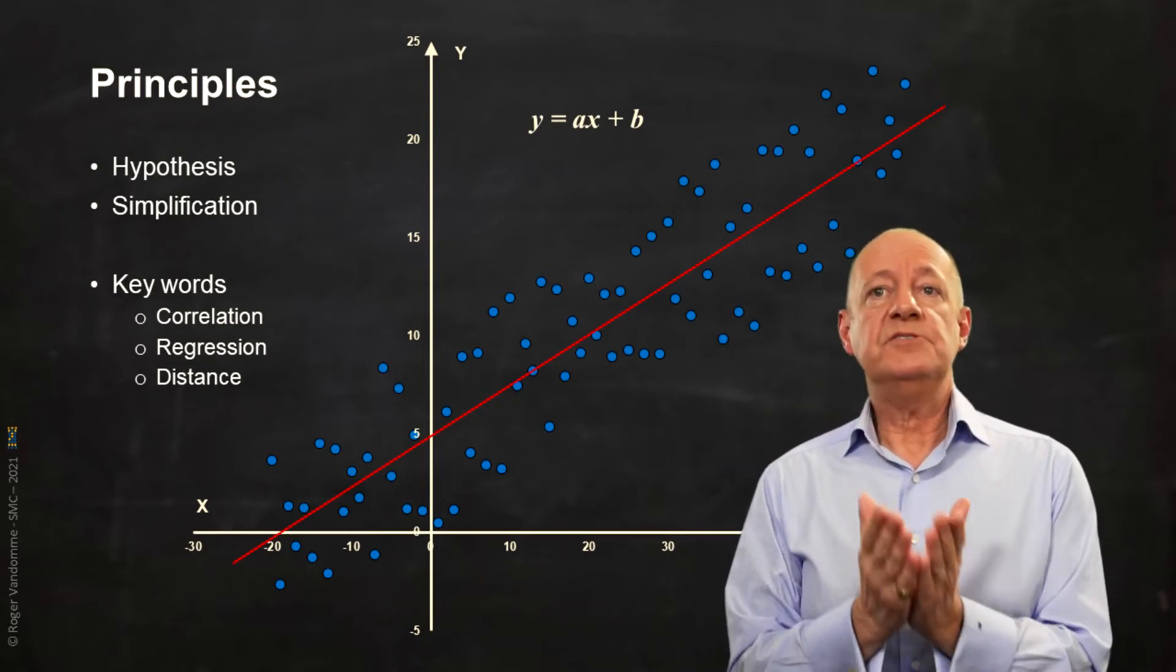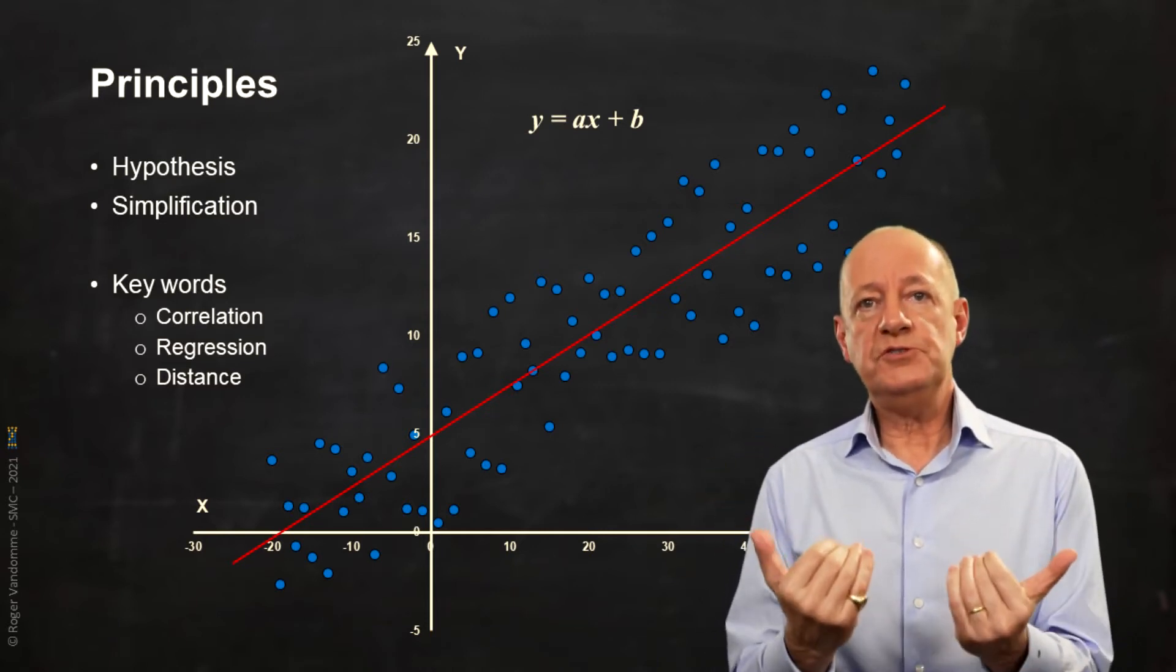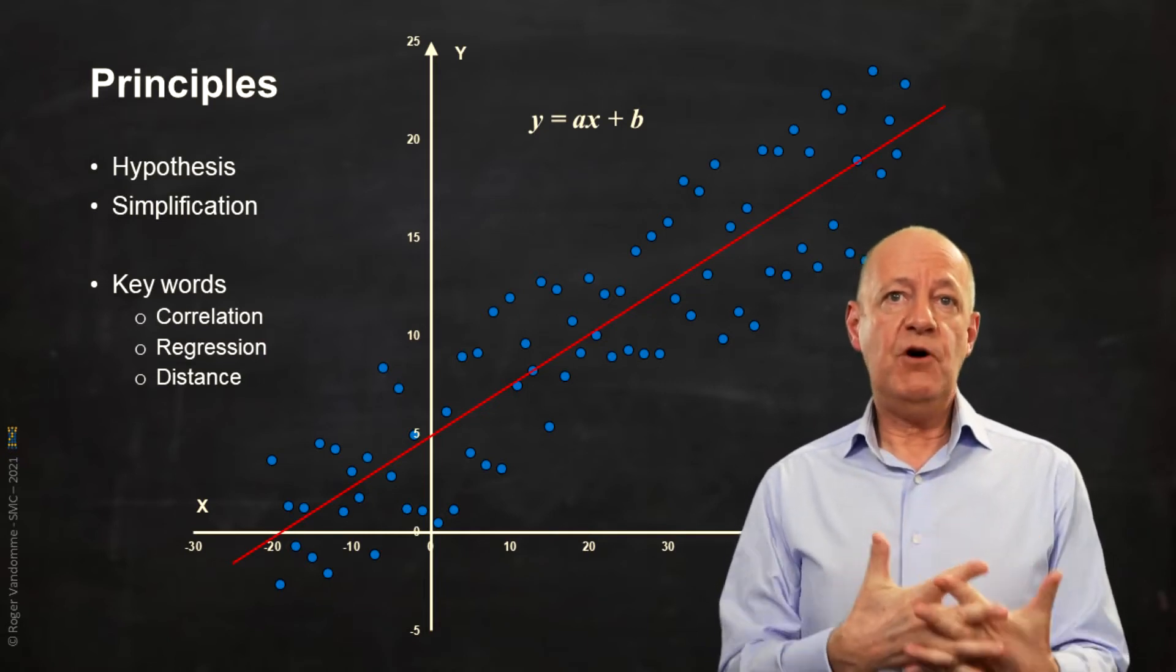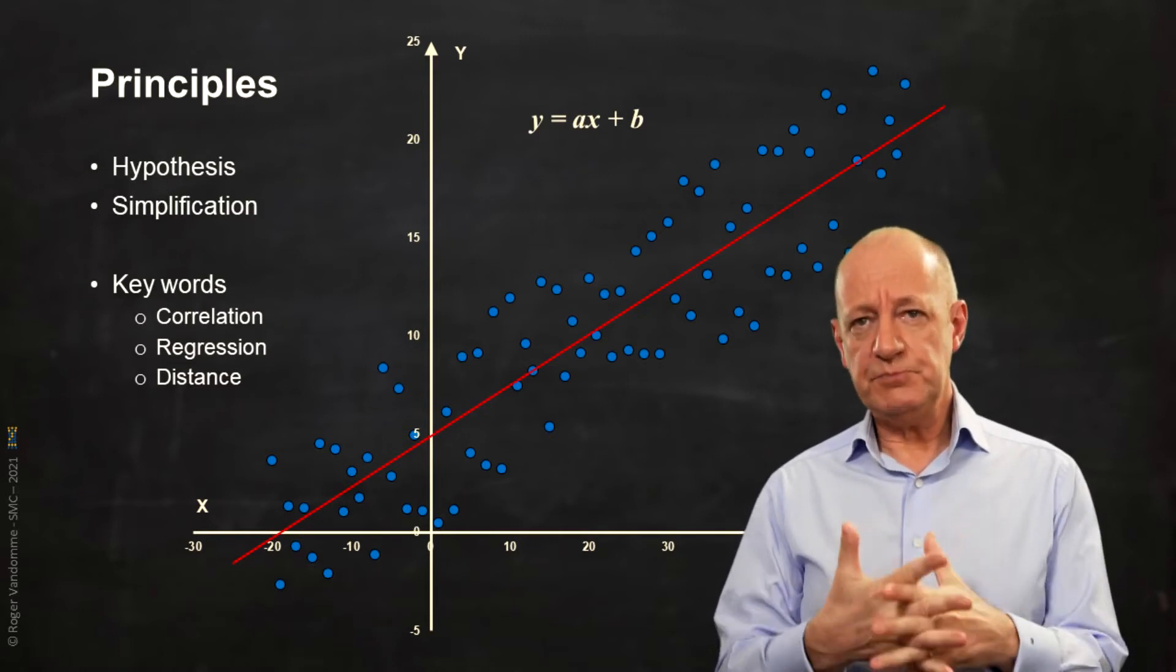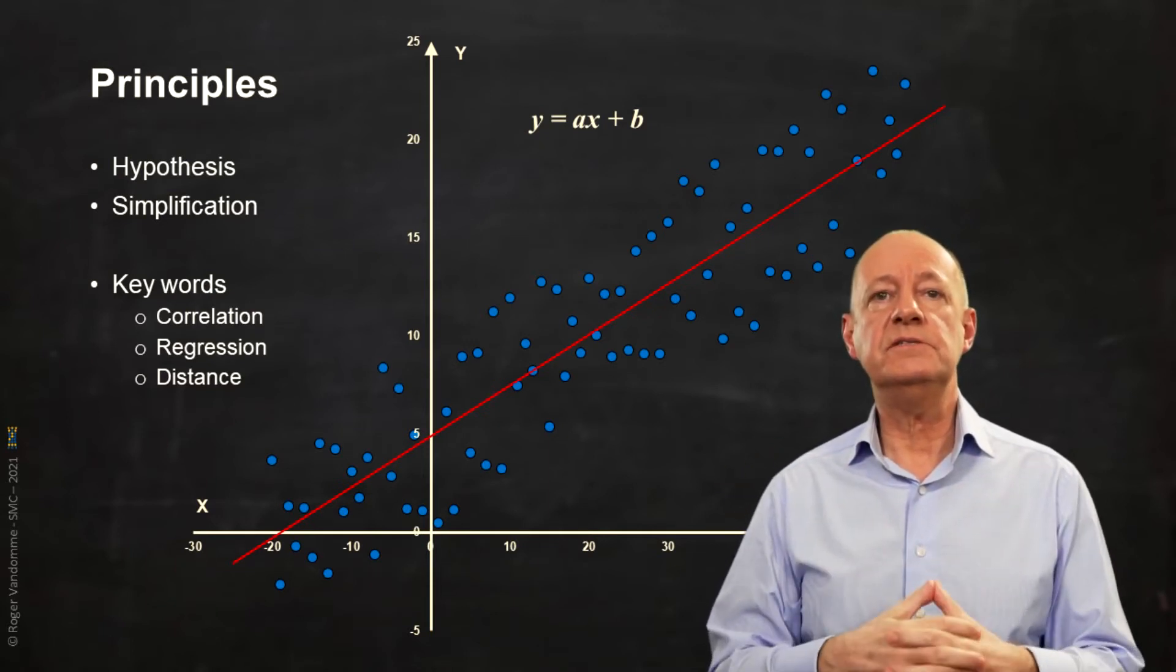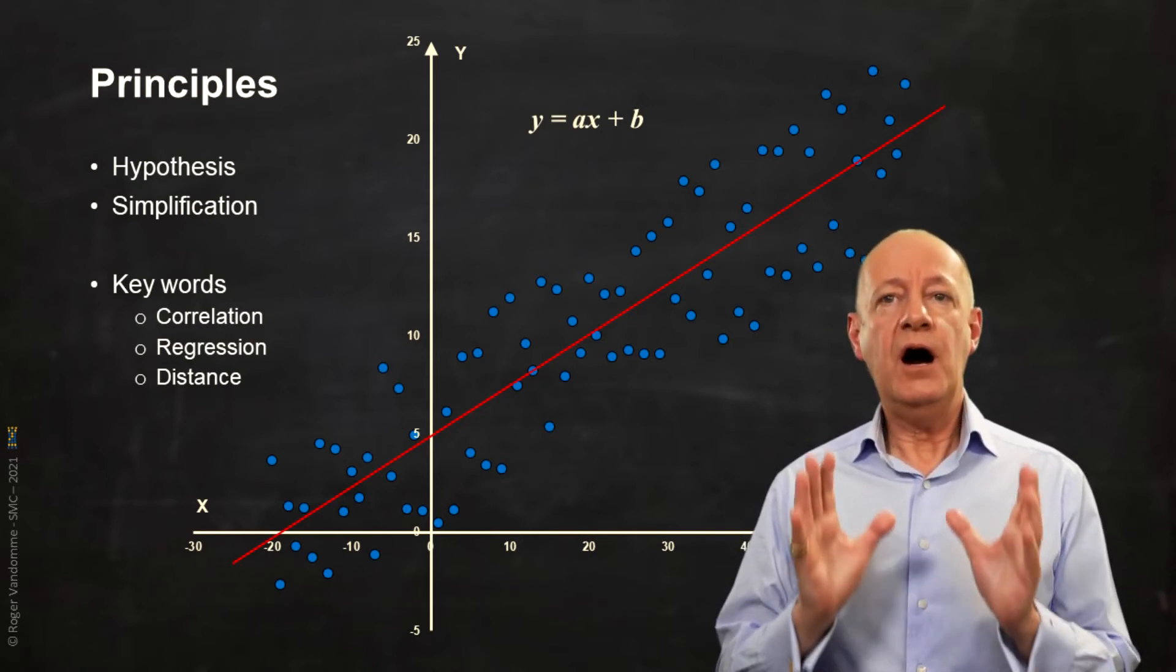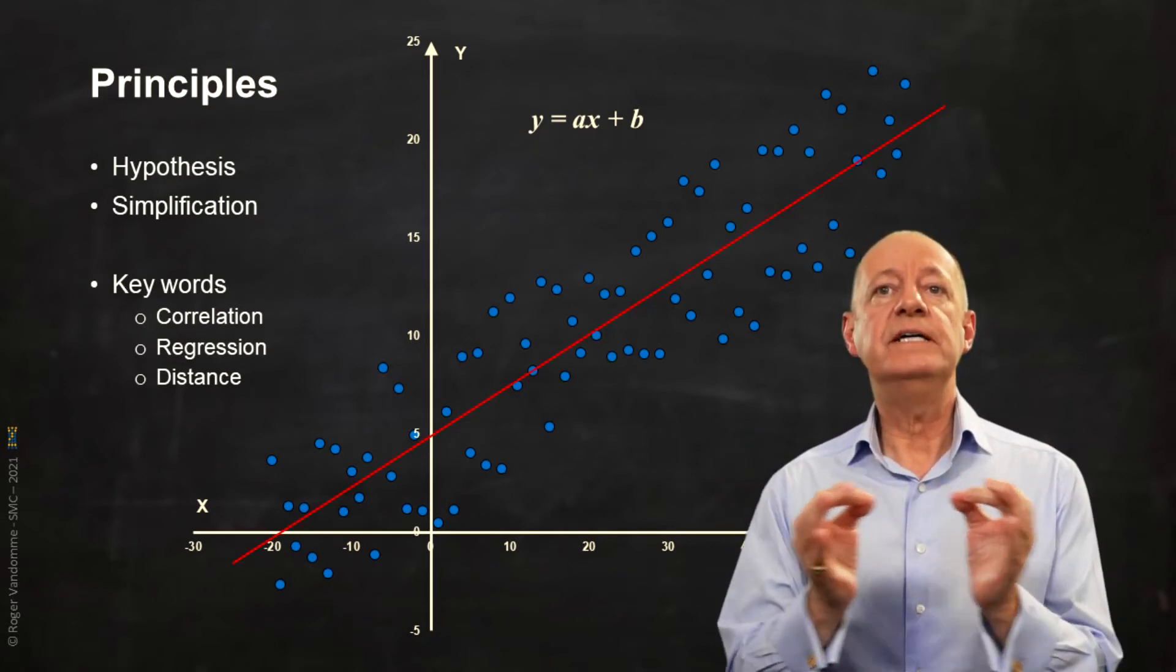The line that best sums up our relationship between x and y will be the one with the lowest sum of squared distances. That's why we call it the least squares regression line. Minimizing the sum of distances is called a cost function or a loss function. This principle is important because it shows that our model is calculated by measuring distances. This method will not change. All the models we will see later, even the most sophisticated ones, are always based on a cost function and a measure of distances.